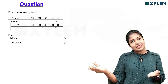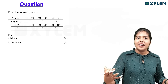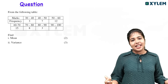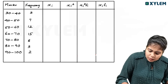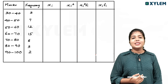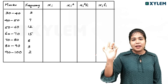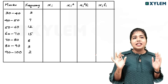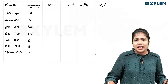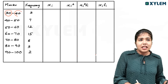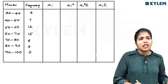What is the mean? Summation xi fi divided by summation fi is the main formula. Let's write xi fi. We have xi fi — we need to write xi. What does xi mean? Xi is the mid value. The mid value for 30 to 40 is 35, and for 40 to 50 it is 30 plus 40 by 2, giving 40 plus 50 by 2.